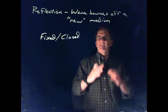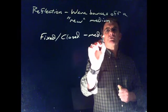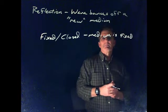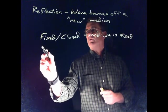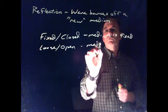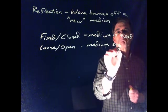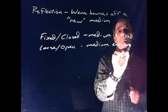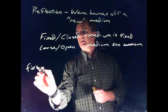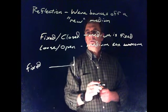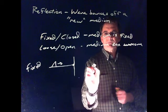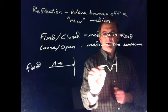Fixed or closed reflection means that the medium is fixed, like a guitar string - perfect example. That string is tied to the wall. It's a fixed medium. Let's say we have a rope and it's tied to the wall, and we send a pulse down that rope. When that pulse hits the end, because it is fixed, the pulse is going to come back inverted.